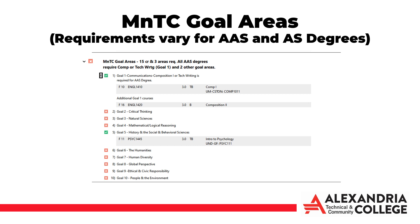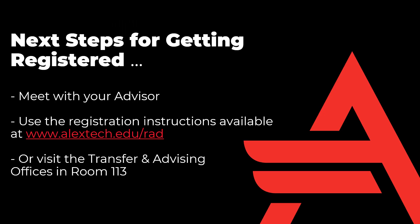Diplomas and certificates may or may not require MNTC or other non-MNTC gen ed courses in their curriculums. AAS degrees require students to have at least 64 credits, and AS degrees require students to have at least 30 credits of Minnesota Transfer Curriculum courses from at least 6 of the 10 goal areas.